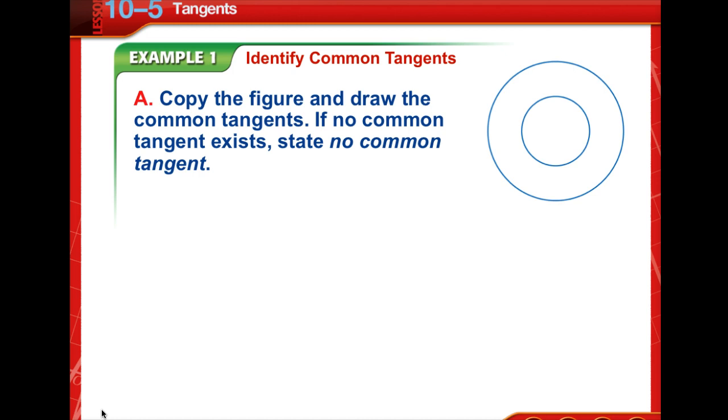A common tangent is a line, ray, or segment that is tangent to two circles in the same plane.